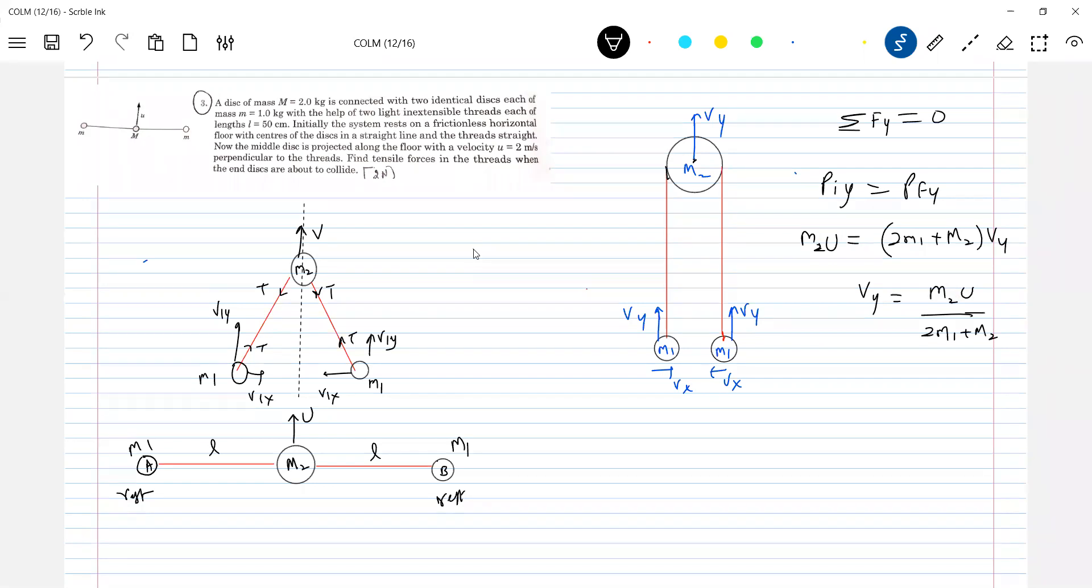So what was the question? Tension is asking when they're about to collide. To make you understand, I'm bringing—because again he has put conditions here. Initially the threads rest on the floor with the center of the disc in a straight line and the threads straight. This is the system resting on a frictionless horizontal floor with the center of the disc in a straight line and the threads straight. Now, this is a disc of mass M and these are particles. So almost with respect to the center of this, you can take all Vy to be along one straight line. Call this equation 1.